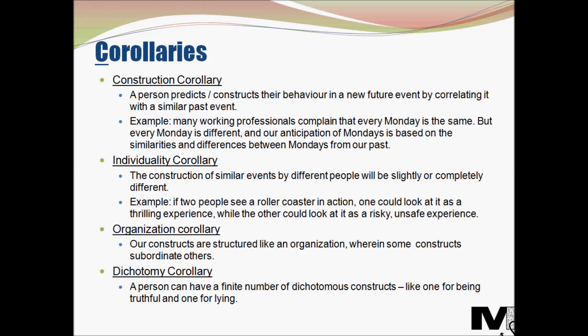The corollaries are as follows. The first is the construction corollary. No event or experience is repeated in its entirety, but there are similar events and experiences, and a person predicts or constructs their behaviour in a new future event by correlating it with a similar past event. For example, many working professionals dislike Mondays and complain that every Monday is the same, but every Monday is actually different. Our anticipation of Mondays is based on the similarities and differences between Mondays we have encountered in the past.